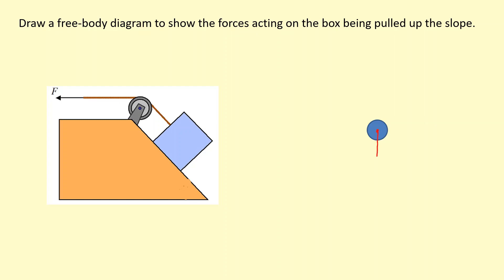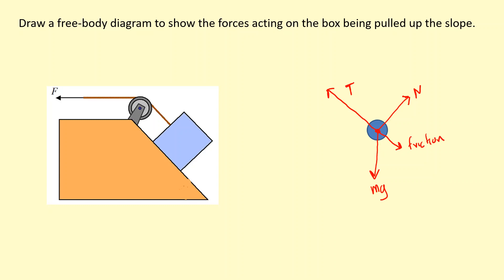Here we have a box being pulled up the slope. Again we have the weight acting downwards mg. We don't know if it's accelerating up the slope or moving at constant speed, but we still have the normal reaction force perpendicular to the slope, the tension along the string pulling it up the slope, and if the surface is rough, the friction would act in the opposite direction to motion — so down the slope.